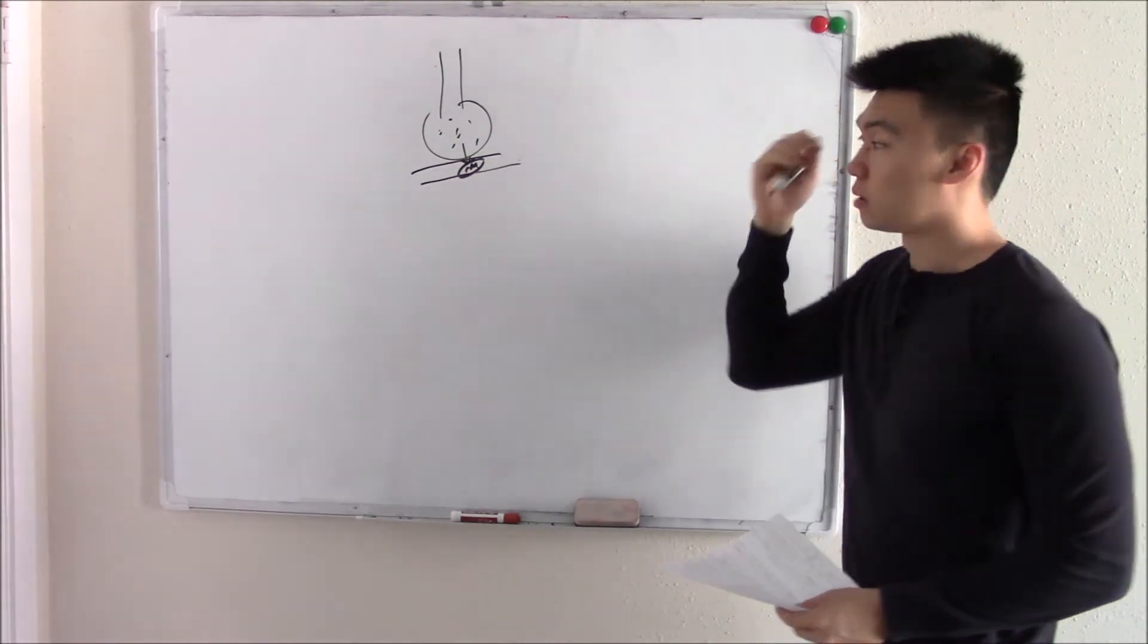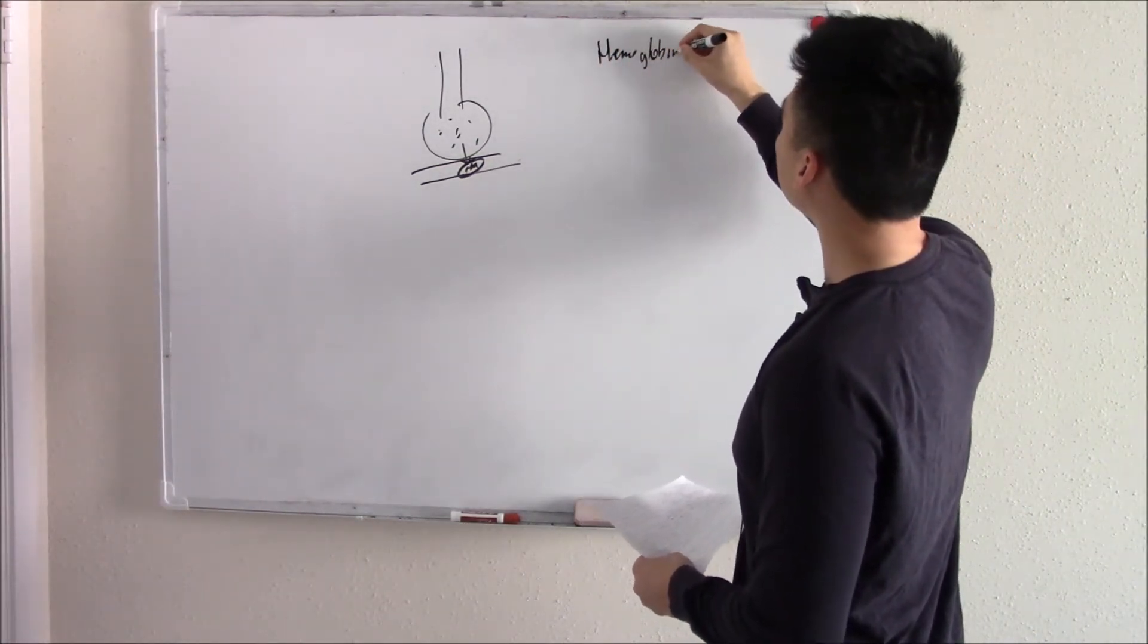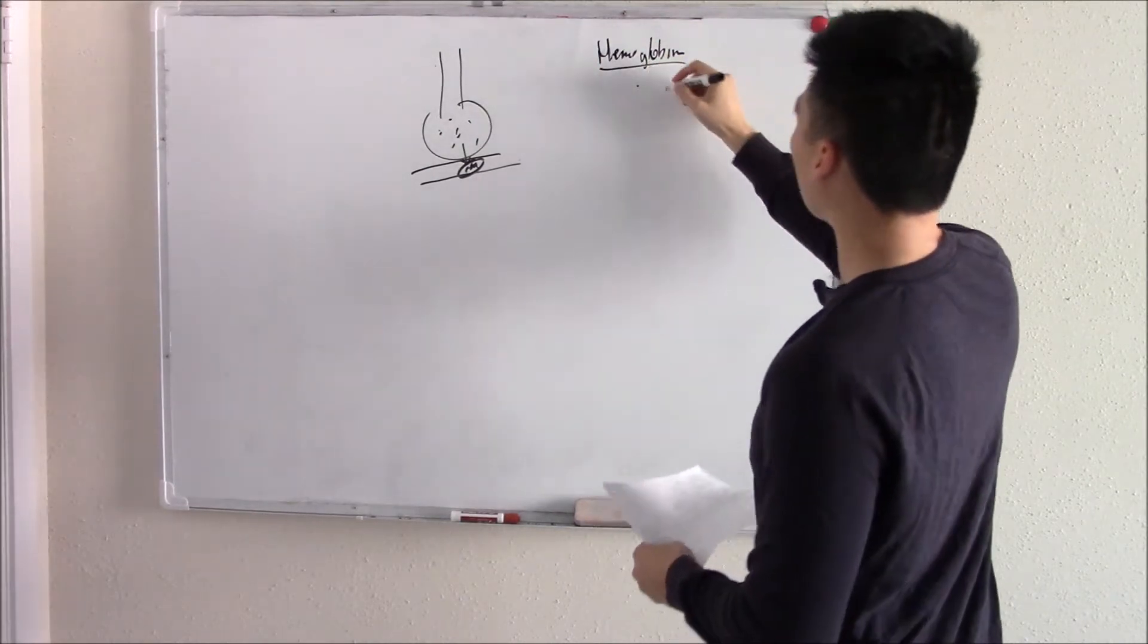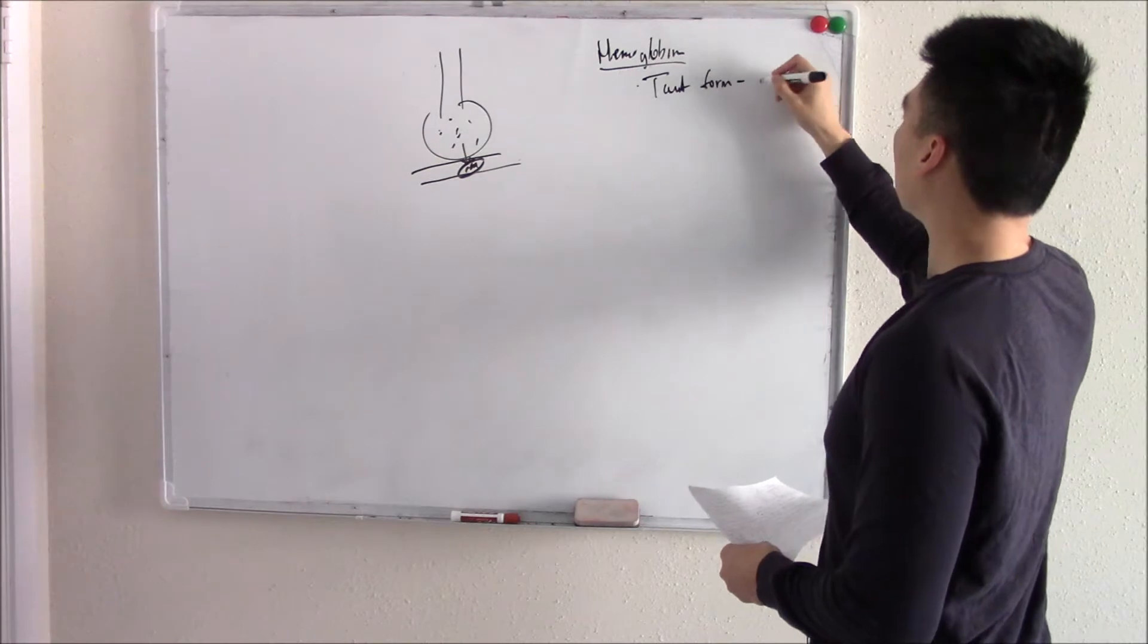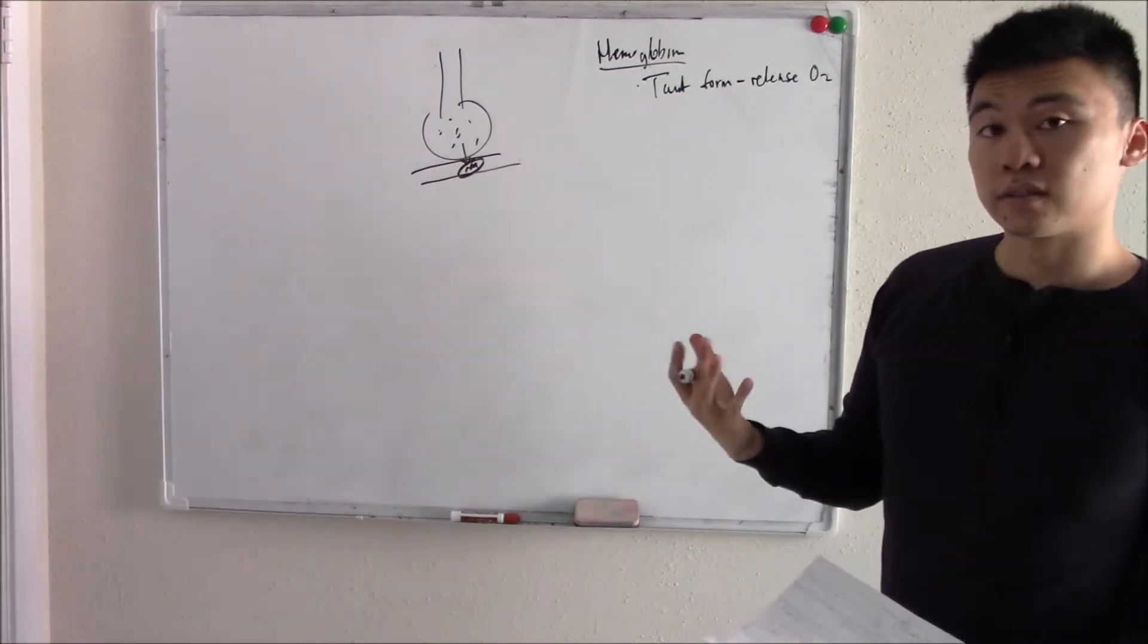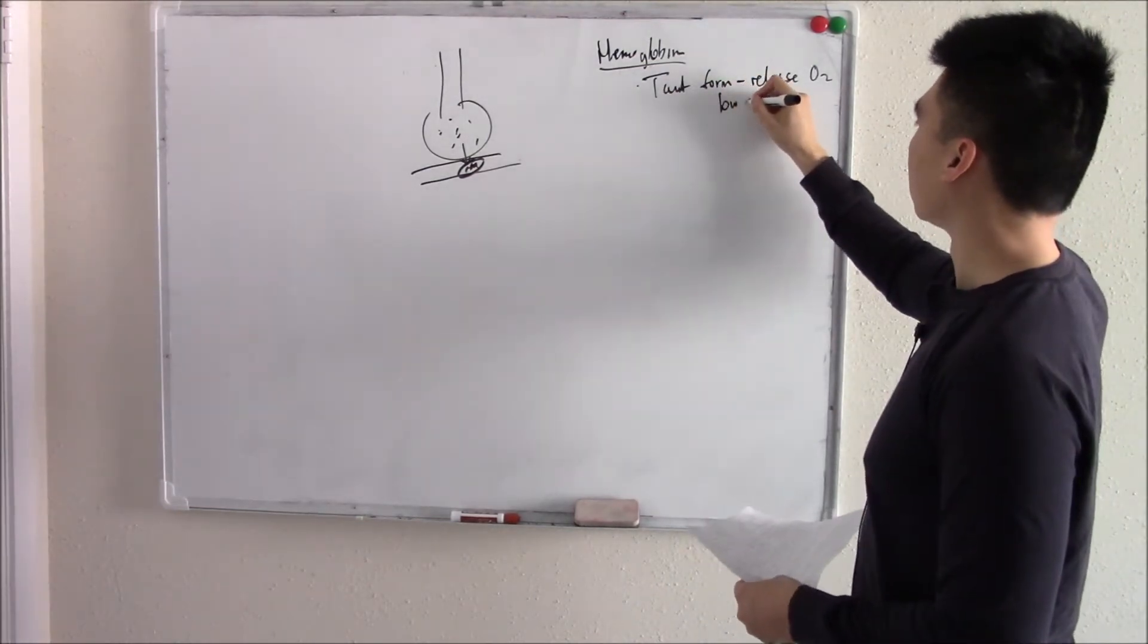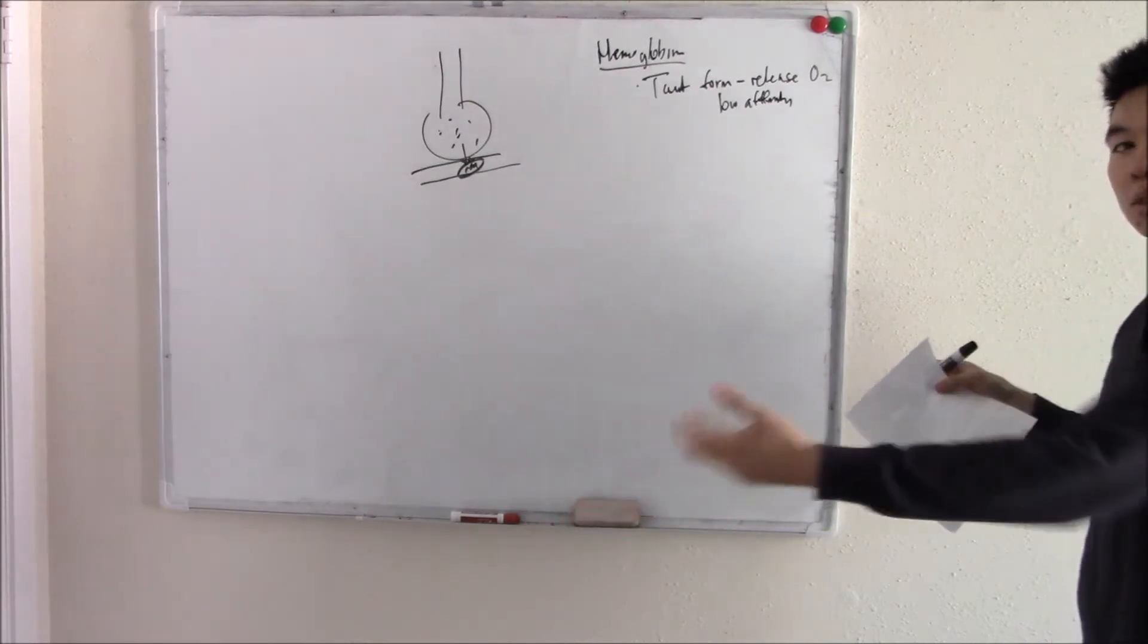Now how do your red blood cells do that? They have something called hemoglobin. Hemoglobin is in two forms: one is called the taut form, and that loves to release oxygen. A fancy way of saying this is that it has a low affinity for oxygen. It doesn't want to be around oxygen, it wants to release it.